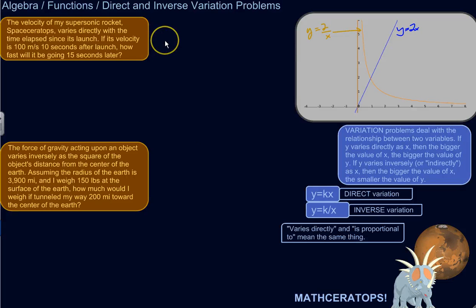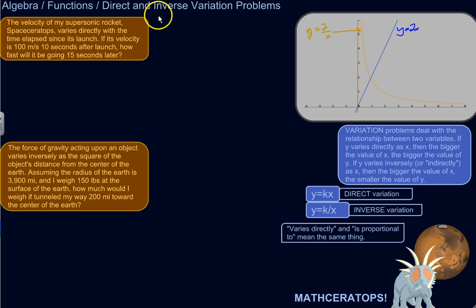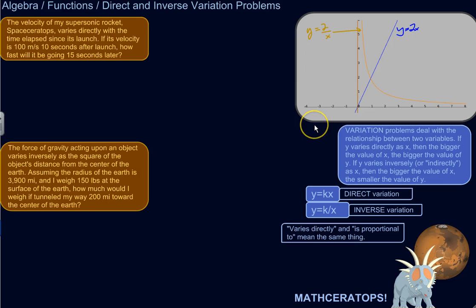We're going to look at two types of variation problems: direct variation and inverse variation. Variation problems deal with the relationship between two variables.